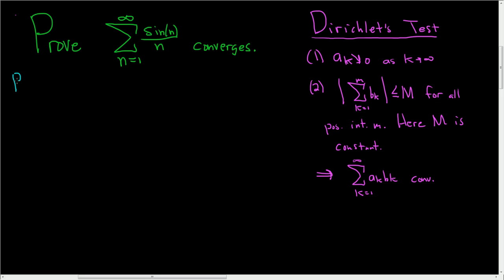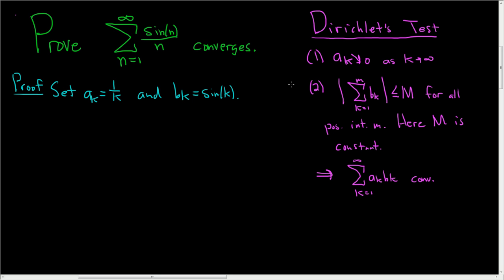This actually converges conditionally, but since this video is long, I'm only going to show convergence, and maybe later I'll make another video to show it does not converge absolutely. So, we're going to set a_k equal to 1/k, and b_k, which has to be what's left over, that's sin(k). Note that a_k = 1/k converges to zero and it's decreasing as k approaches infinity. So condition 1 of Dirichlet's test holds.